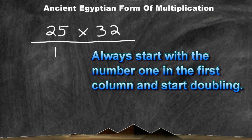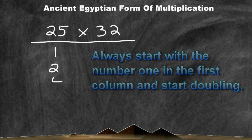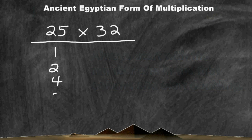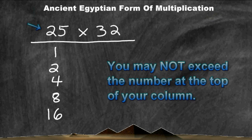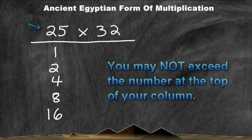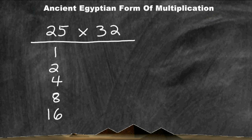After writing the number 1, you always double it to get 2, then double 2 to get 4, double 4 to get 8, and double 8 to get 16. You must stop doubling when you know that the next number would exceed the value at the top of your column. In this case, the number at the top of our column is 25, so we may not exceed 25.